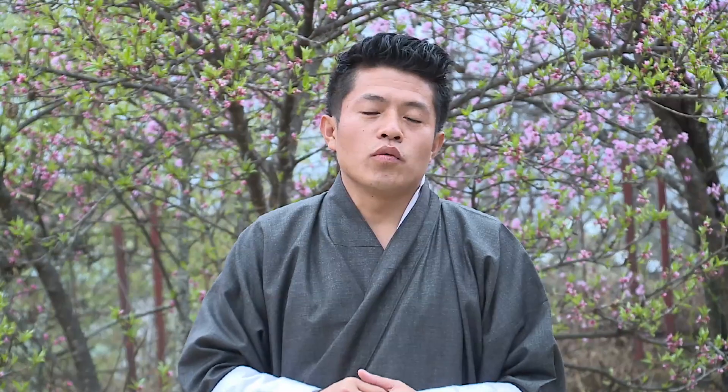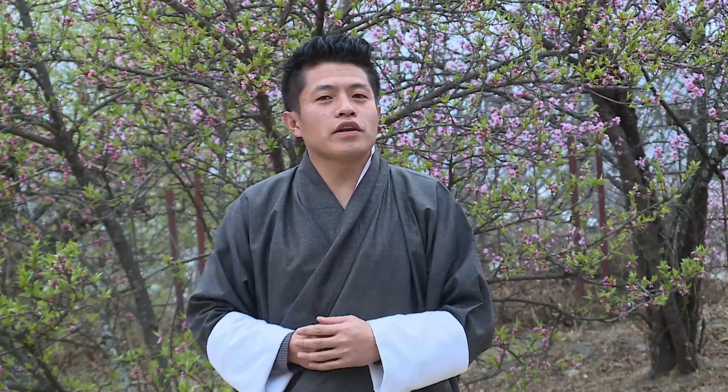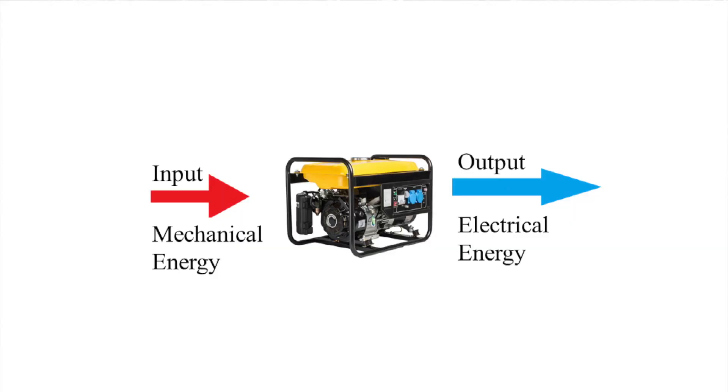What is electromagnetic induction? Quite simply, electromagnetic induction is the production of current due to a change in magnetic field. When there is a disturbance in the magnetic field, it induces an electric current. An AC generator functions based on this principle, and you might have noticed that it is opposite to a motor — meaning mechanical motion is used to produce an electric current.